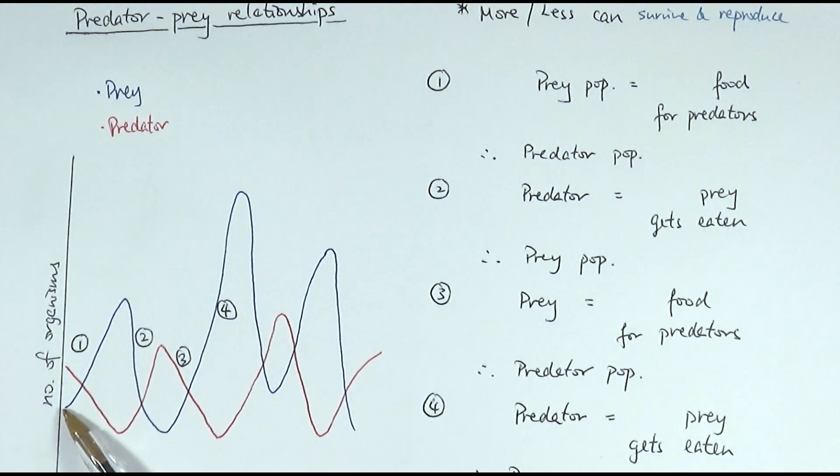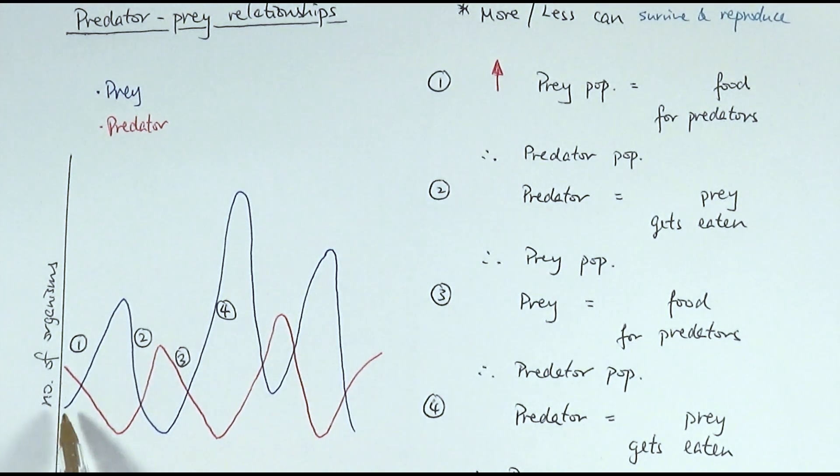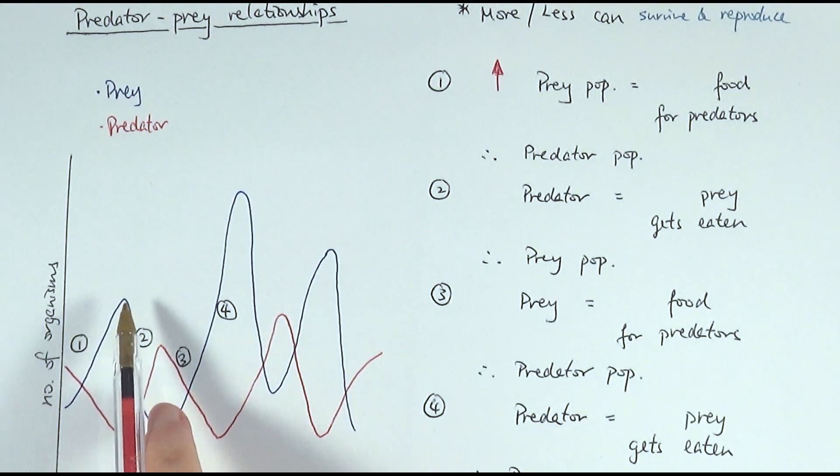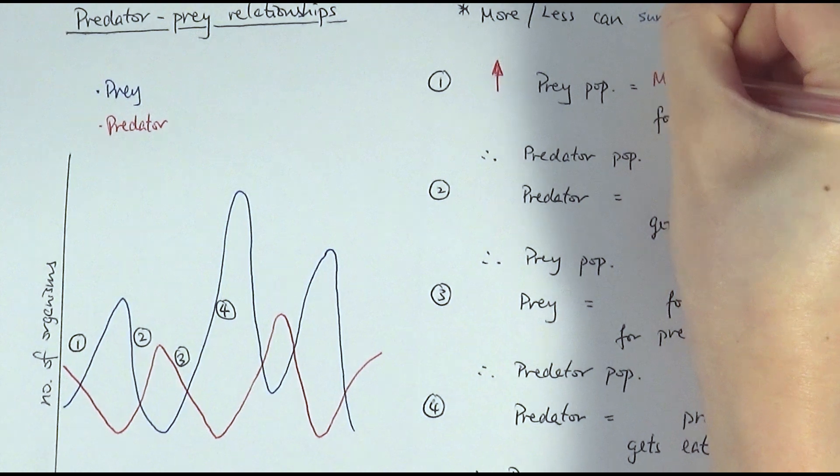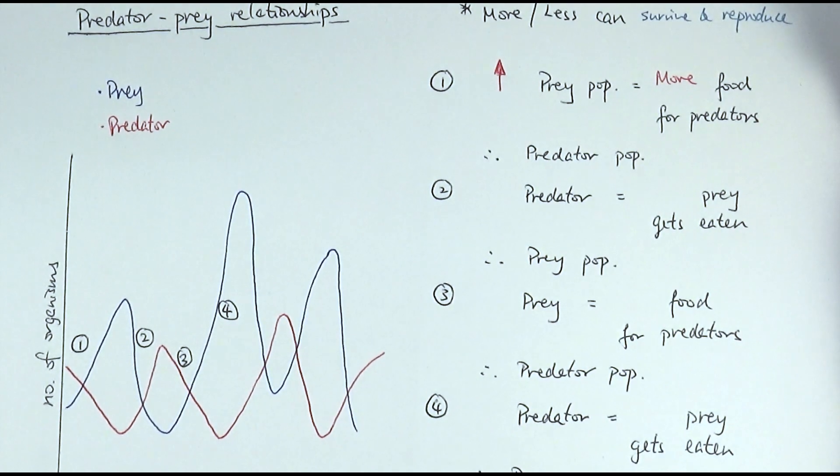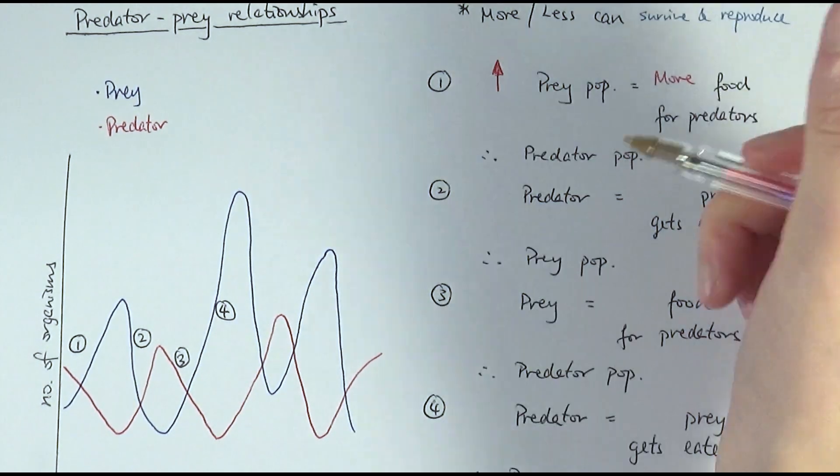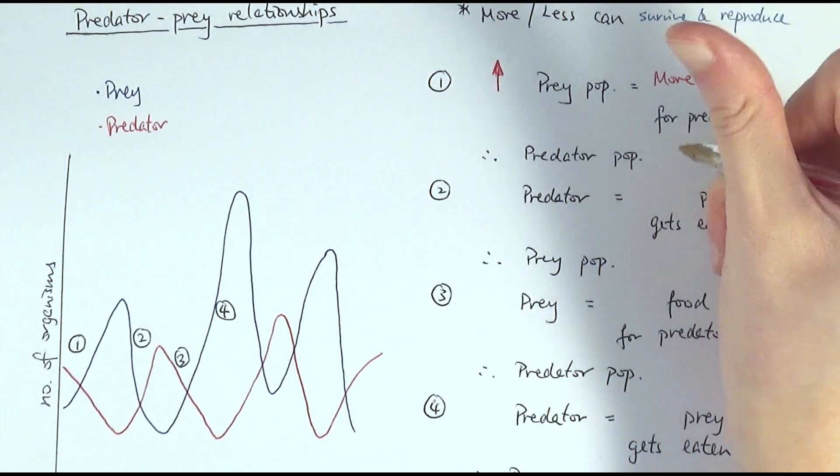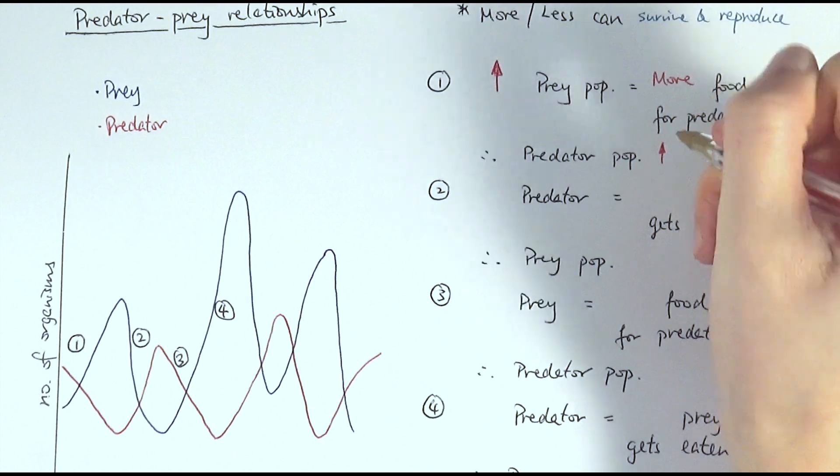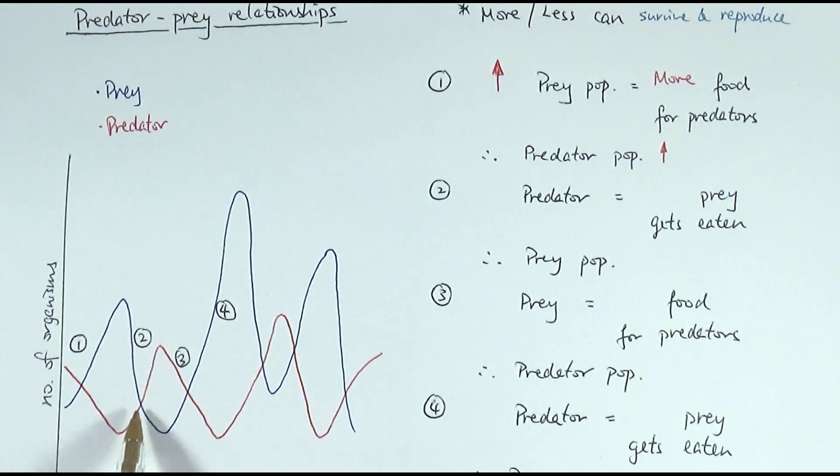In the first stage, you can see that the prey population is increasing, as shown in the curve here. So an increase in the population of the prey, that means more food will be available for the predators. Therefore, more of the predator can survive and reproduce, therefore the predator population would increase after some time. So as it goes up, then this one also, the predator curve also goes up eventually.